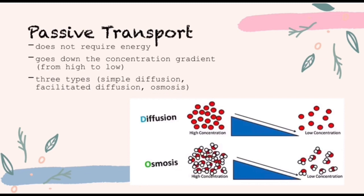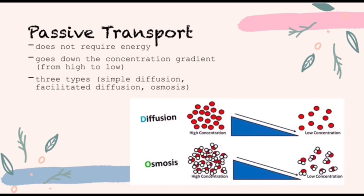There are three types of passive transport: simple diffusion, facilitated diffusion, and osmosis. We can see both active and passive transport occurring in the villus, renal tubule, and the root of plants. Gas exchange in the alveoli involves passive transport, whereas sucrose transport in the phloem of plants involves active transport.